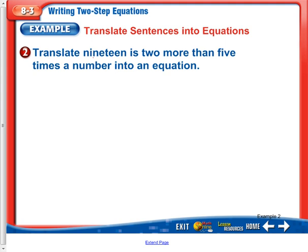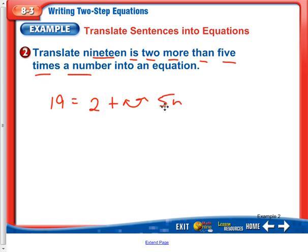Translate: '19 is two more than five times a number.' So now we write 19 equals two plus — then 'than' tells us to flip the order. Five times a number: we can say five n. Two plus five n is the same as five n plus two, but we do want to get it in the correct order. So let's rewrite it: 19 equals five n plus two.